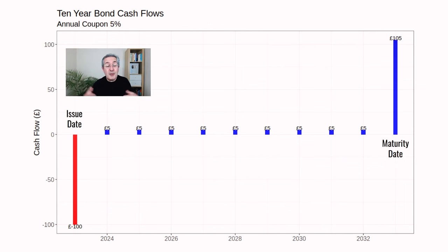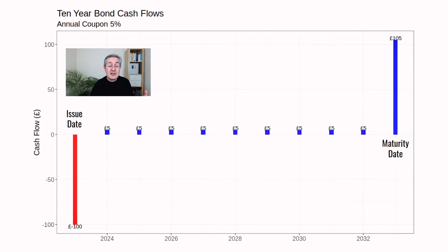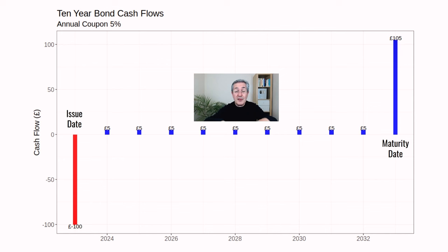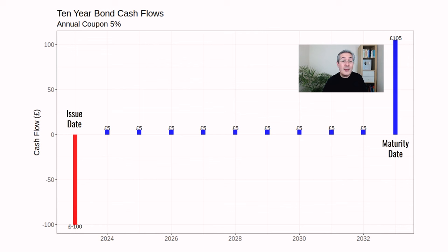This is what the lifetime of a government bond looks like. It has an issue date — think of that as its birthday — and the price of the bond when it's created is 100. If you buy on that date, you have a big negative cash flow because you pay 100 to buy the bond. Then during the life of the bond you earn a regular interest payment called the coupon. In this case the coupon is 5%, so on your £100 investment you earn £5 a year. And then on the maturity date, you get your £100 back and also your last £5 coupon.